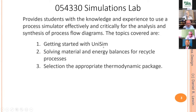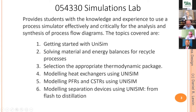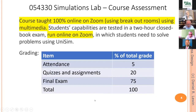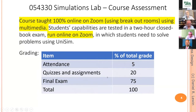The simulation lab is essentially a driving school in the usage of Unisim, training students to be proficient enough to design and optimize process flow sheets. Unisim was selected because it is the easiest flow sheet simulator to master. Over the course of the semester, students familiarize themselves with all relevant features of Unisim — from material and energy balances including recycles, all the way to optimization. The course is taught 100% online using multimedia modules, and students' capabilities are tested in a two-hour closed-book exam run online.